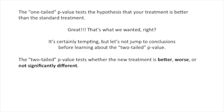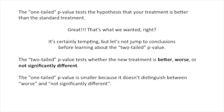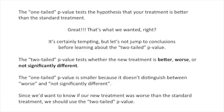The two-tailed p-value tests whether the new treatment is better, worse, or not significantly different. The one-tailed p-value is smaller because it doesn't distinguish between worse and not significantly different. Since we'd want to know if our new treatment was worse than the standard treatment, we should use the two-tailed p-value.